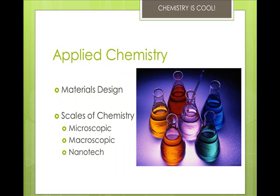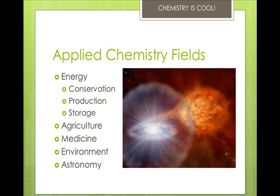Applied chemistry can function in material science, such as in paint, plastics, and nanotechnology industries. Microscopic scale refers to the stuff that is too small to see with the unaided eye. The macroscopic scale is the stuff that is big enough to see normally. And nanotechnology involves manipulating individual atoms or molecules. There are many applied chemistry fields.